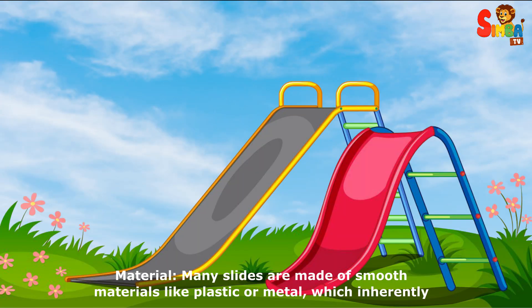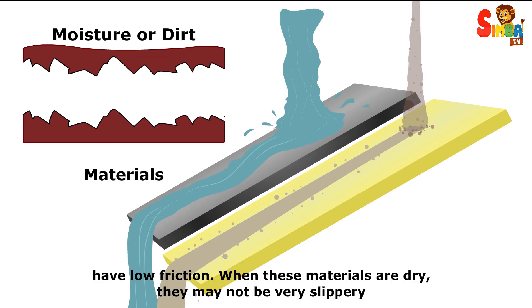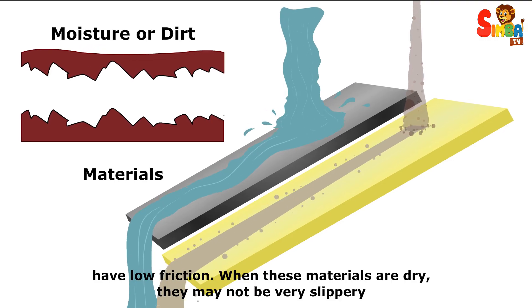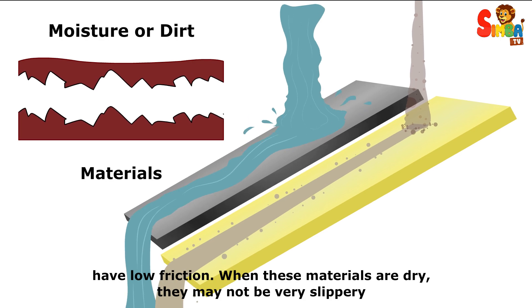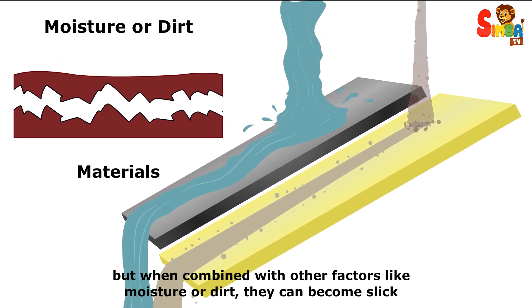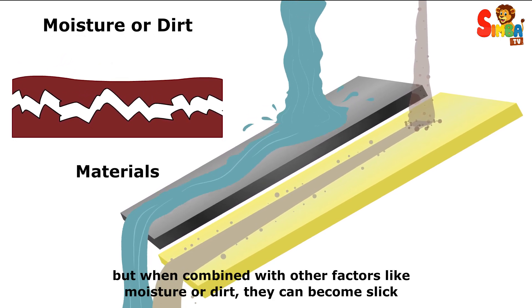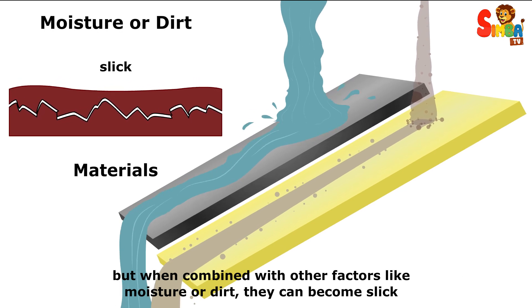Material. Many slides are made of smooth materials like plastic or metal, which inherently have low friction. When these materials are dry, they may not be very slippery, but when combined with other factors like moisture or dirt, they can become slick.